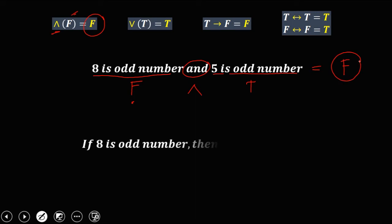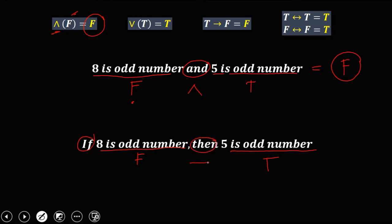Next given: If 8 is an odd number, then 5 is an odd number. '8 is an odd number' is false, and '5 is an odd number' is true. The connector is implication. For implication, only true implies false is false. Since this one is false implies true, therefore the truth value of this compound statement is true.